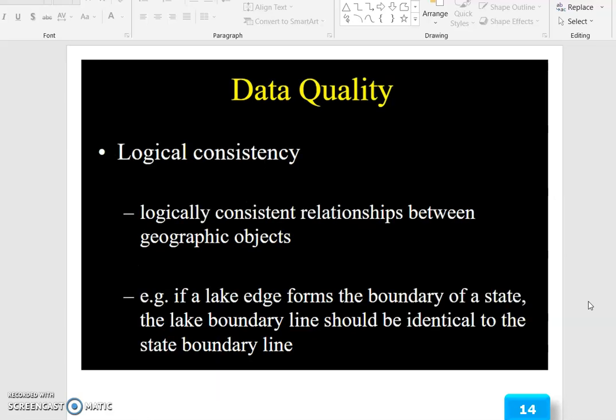Next is logical consistency, logically consistent relationships between geographic objects. For example, if a lake edge forms the boundary of a state, the lake boundary line should be identical to the state boundary line.